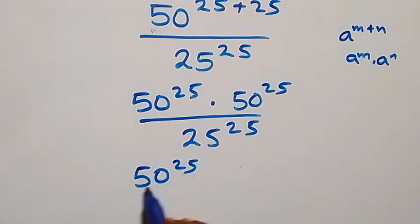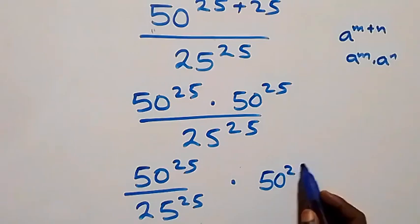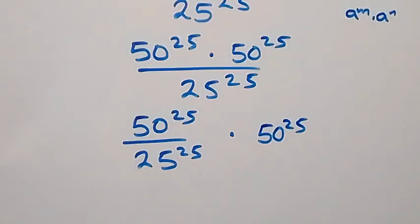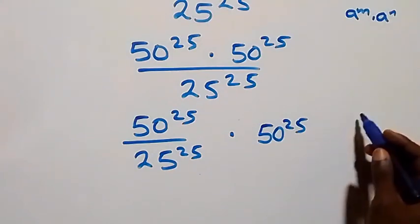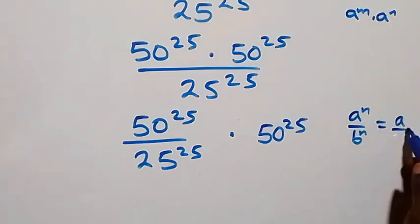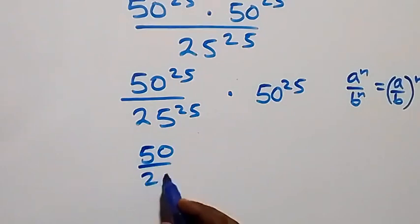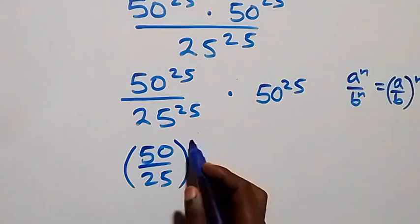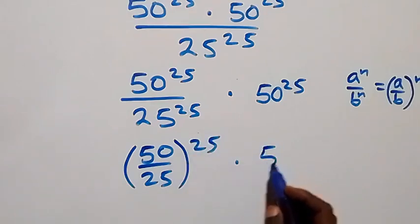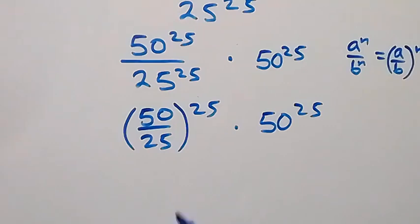From here we can write this as 50 raised to power 25 divided by 25 raised to power 25, then times 50 raised to power 25. From the law of indices, a raised to power n over b raised to power n is the same thing as (a over b) raised to power n. So we can write it as (50 over 25) raised to power 25, times 50 raised to power 25.